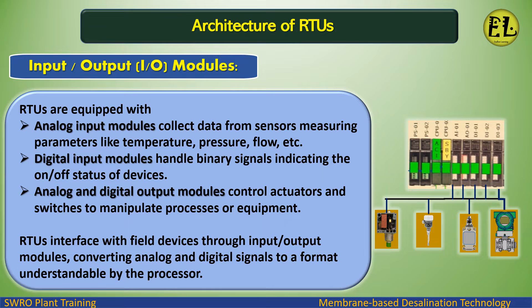RTUs are equipped with input/output (I/O) modules. Analog input modules collect data from sensors measuring parameters like temperature, pressure, and flow. Digital input modules handle binary signals indicating the on/off status of devices. Analog and digital output modules control actuators and switches to manipulate processes or equipment. RTUs interface with field devices through these I/O modules, converting analog and digital signals to a format understandable by the processor.